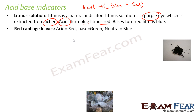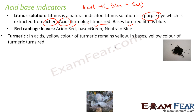The next indicator is red cabbage leaves. When you put acid, it becomes red. When you put base, it becomes green. By default the color is blue, and when you put a neutral substance, it remains blue.